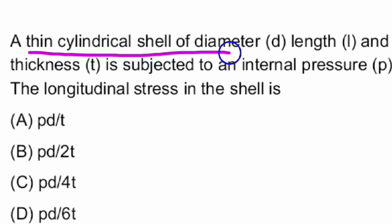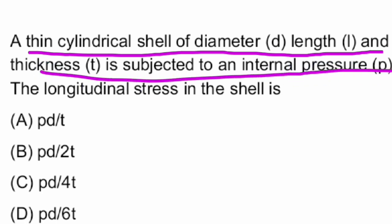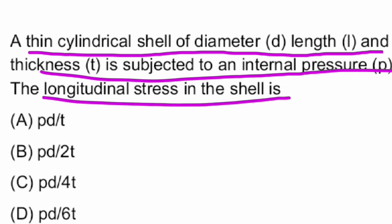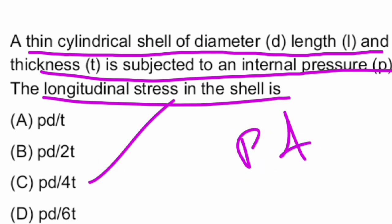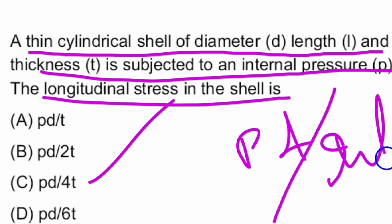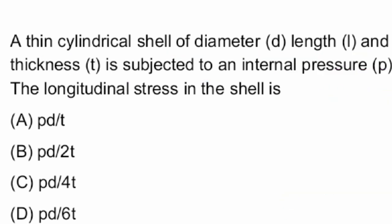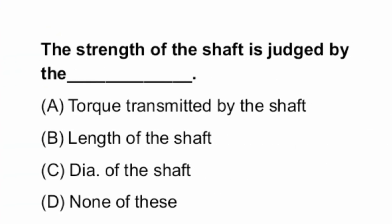A thin cylindrical shell of diameter D, length L, and thickness T is subjected to an internal pressure P. The longitudinal stress in the shell is given by PD/4T. So option C is the right answer.